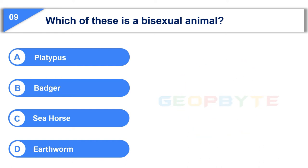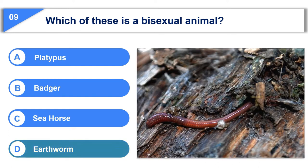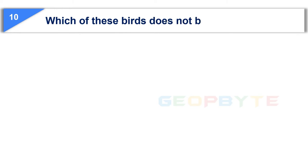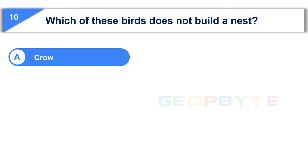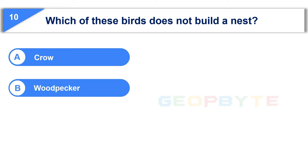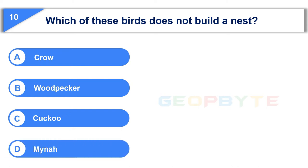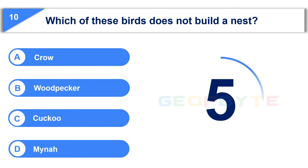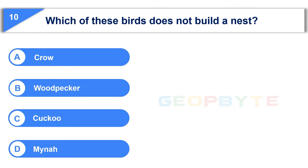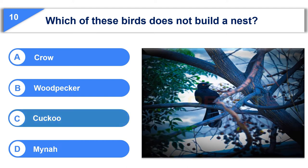Your time is up and the correct answer is Option D: Earthworm. Moving to the next question: which of these birds does not build a nest? Option A: Crow. Option B: Woodpecker. Option C: Cuckoo. Option D: Myna. Your time is up and the correct answer is Option C: Cuckoo.